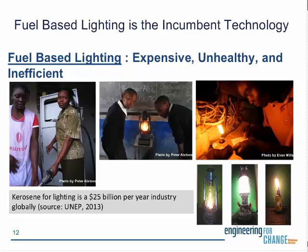When there's a blackout — whether permanent or intermittent — people turn to fuel-based lighting. Fuel-based lighting is expensive, unhealthy, and inefficient. Kerosene is the primary fuel, with sellers in every town. People also use diesel, candles, pitch wood, and in extreme situations even tires and sandals. Kerosene lighting is roughly a $25 billion per year industry globally, representing a significant financial burden for people without access to electricity.